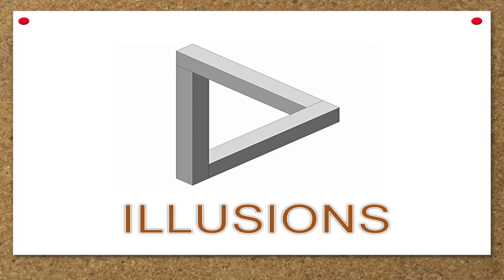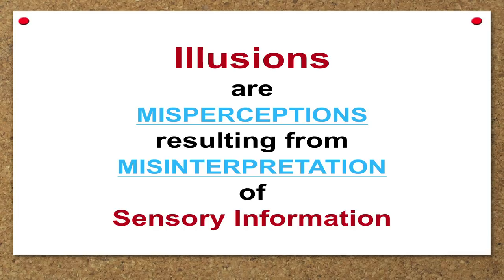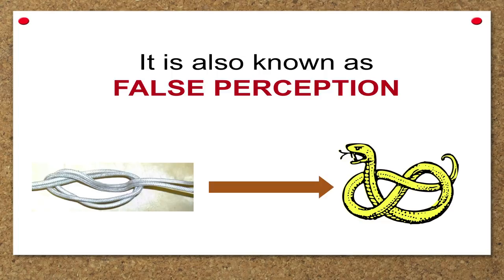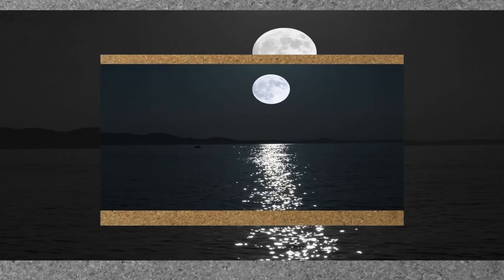Now let us come to the next topic: illusions. What is an illusion? Illusions are misperceptions — they result from misinterpretation of sensory information and are known as false perceptions. For example, if there is a thick rope lying on one side in the dark, it could be perceived as a snake. Illusion is a normal phenomenon perceived by all human beings and animals.